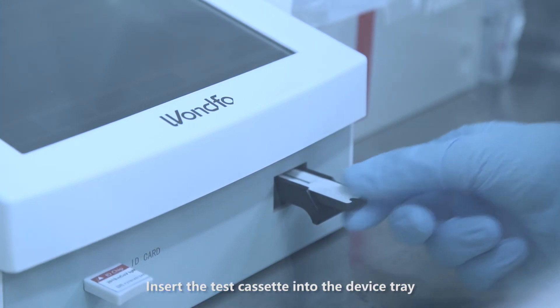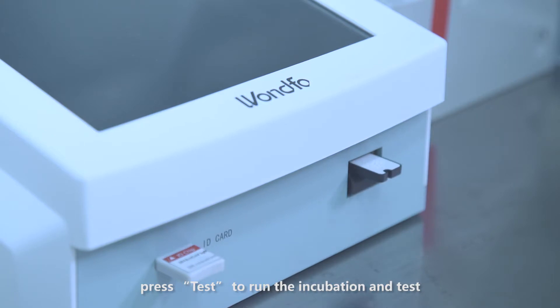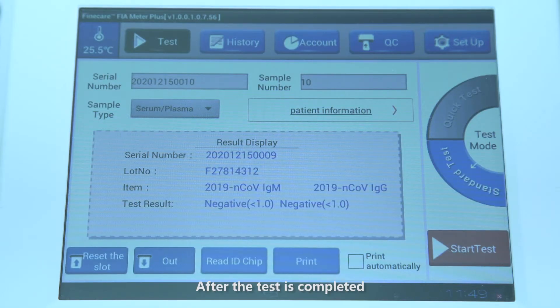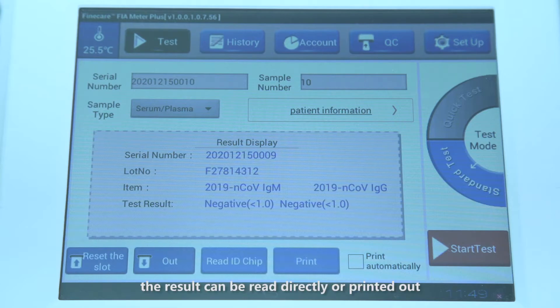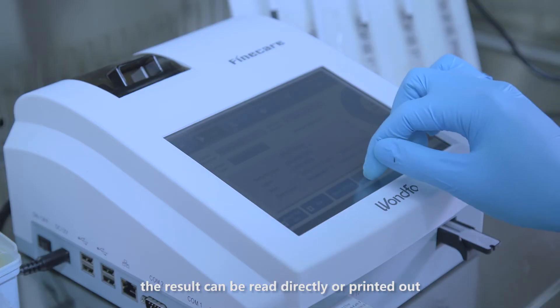Insert the test cassette into the device tray. Press test to run the incubation and test. After the test is completed, the result can be read directly or printed out.